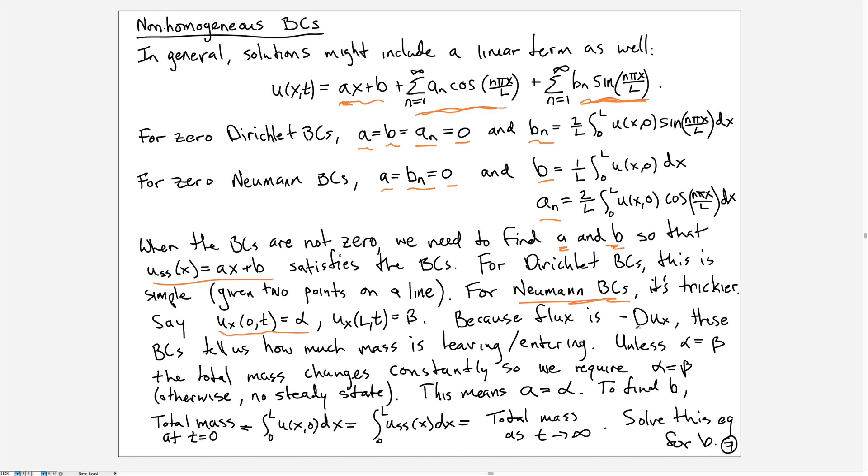u_x actually gives you the flux once you've multiplied by D. These boundary conditions actually tell us what the flux is at either of the endpoints. So u_x = alpha at one end and u_x = beta at the other end. If alpha is not equal to beta, that means the flux in through one end is going to differ from the flux out at the other end, and that means it'll be impossible to have a steady state.